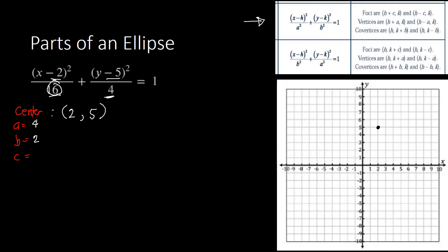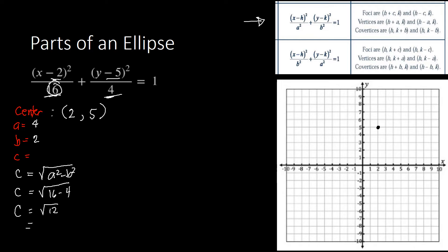For c, we use the formula c equals the square root of a squared minus b squared. Our a squared is 16 and b squared is 4, so c equals the square root of 16 minus 4, which is the square root of 12, equal to approximately 3.46.